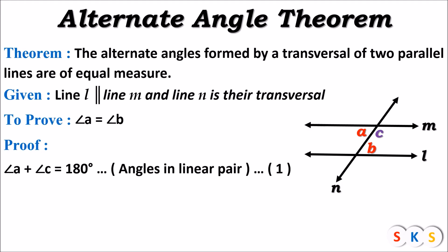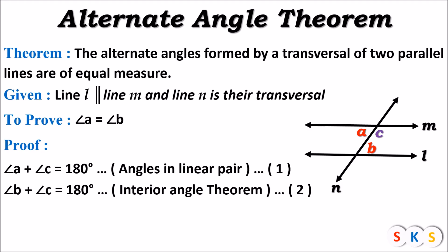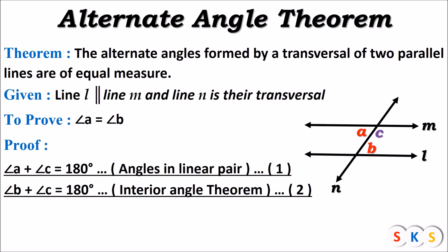Angle B plus angle C equals 180 degrees because of the interior angle theorem. What is the interior angle theorem? If a transversal intersects two parallel lines, then the pair of interior angles are supplementary. Look at this figure — angle B and angle C is a pair of interior angles, and the sum of these two angles is 180 degrees. That is equation number two.